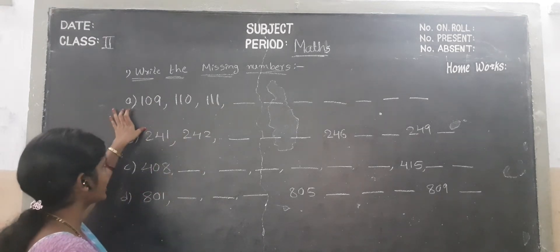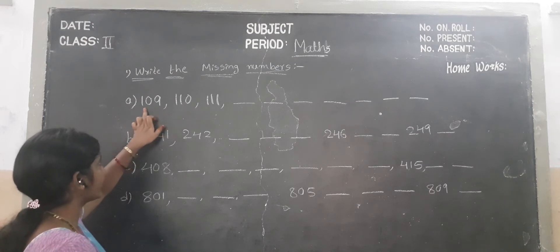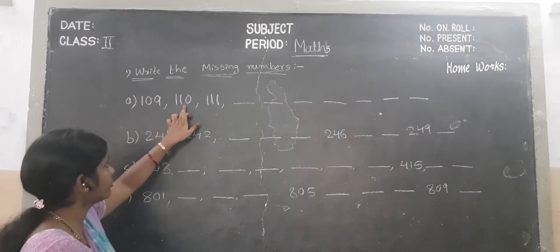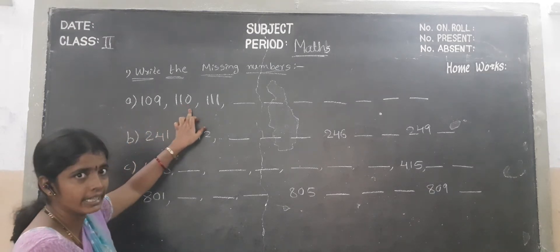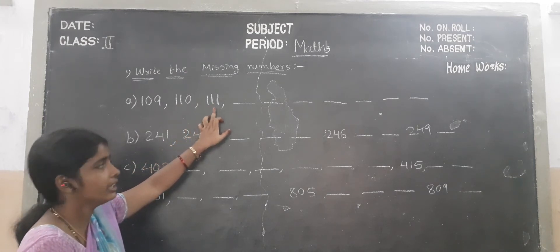See the first sum children. 1, 0, 9 — 109. 1, 1, 0 — 110. 1, 1, 1 — 117.